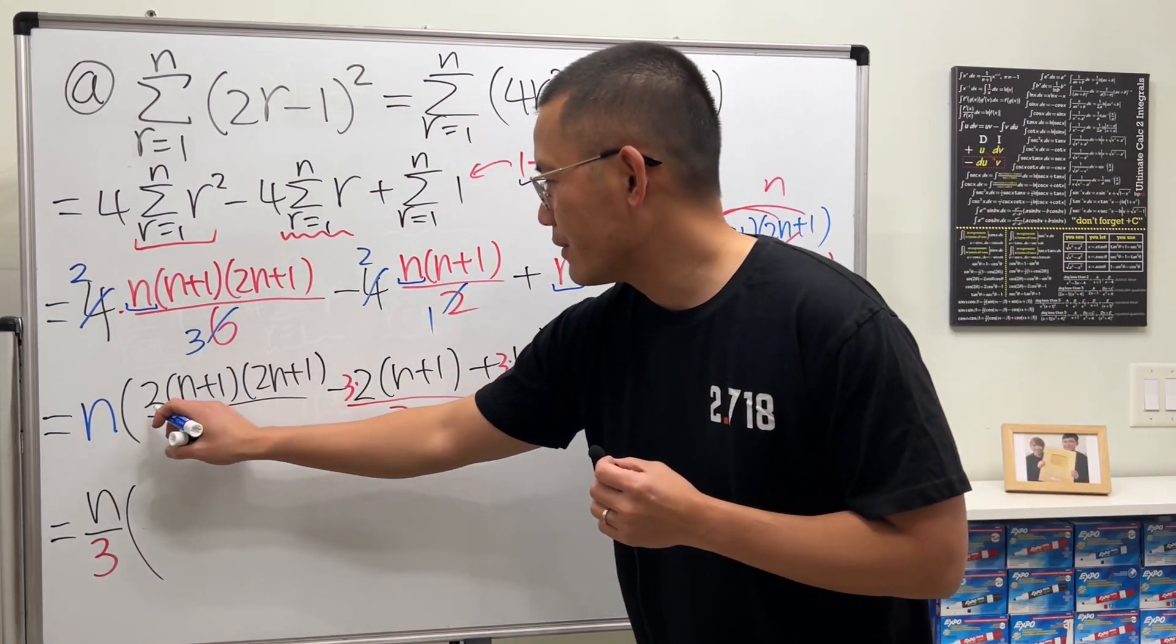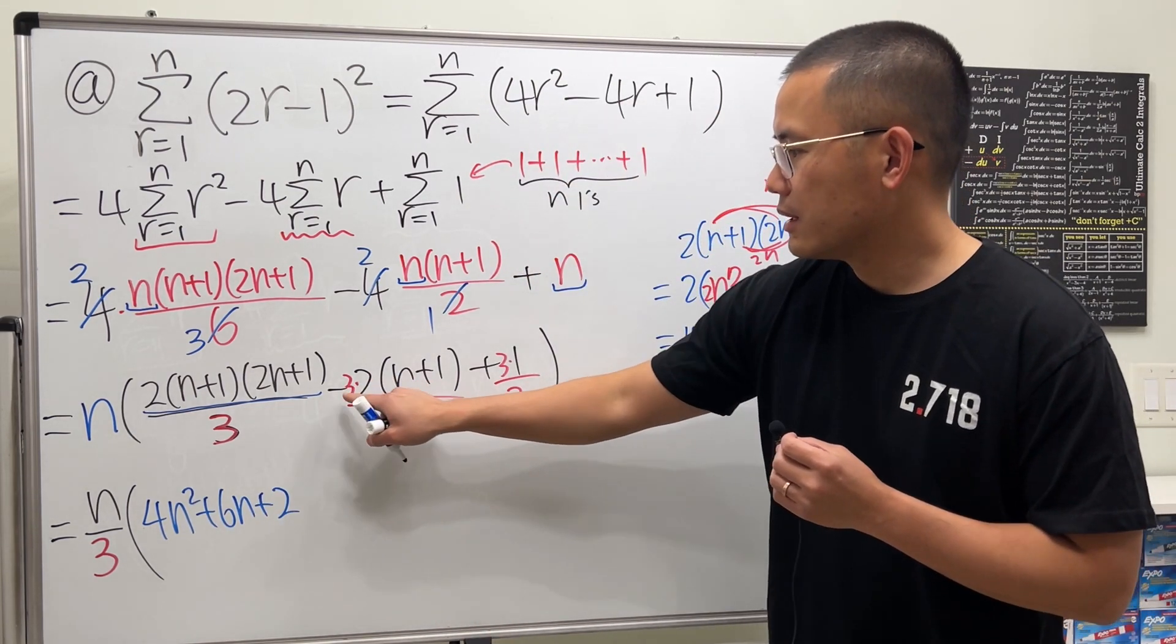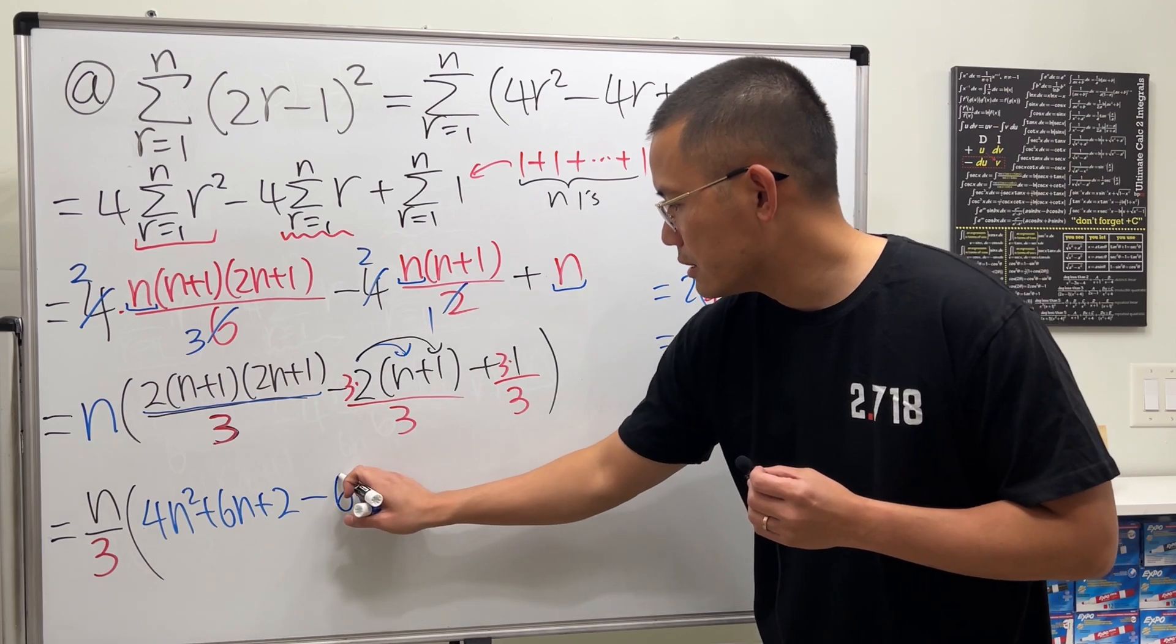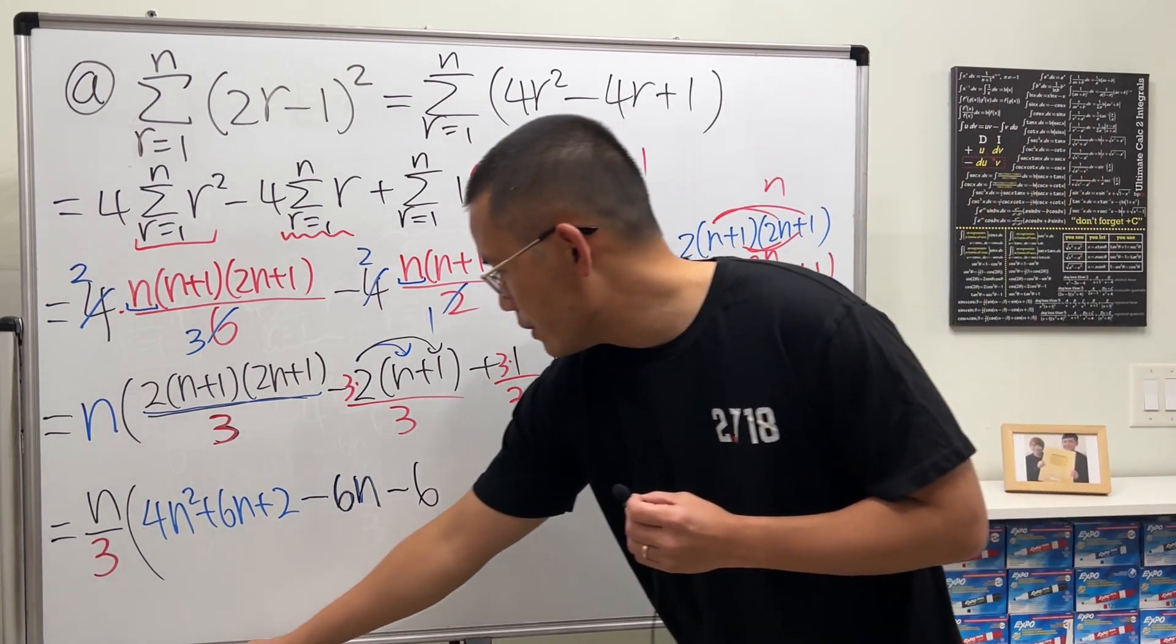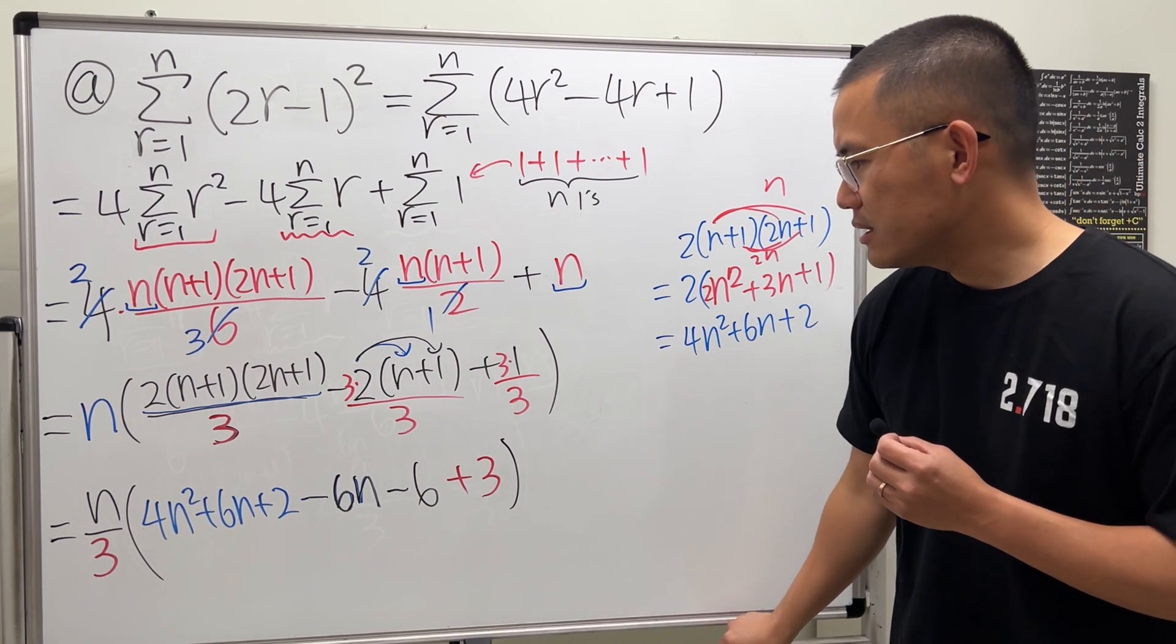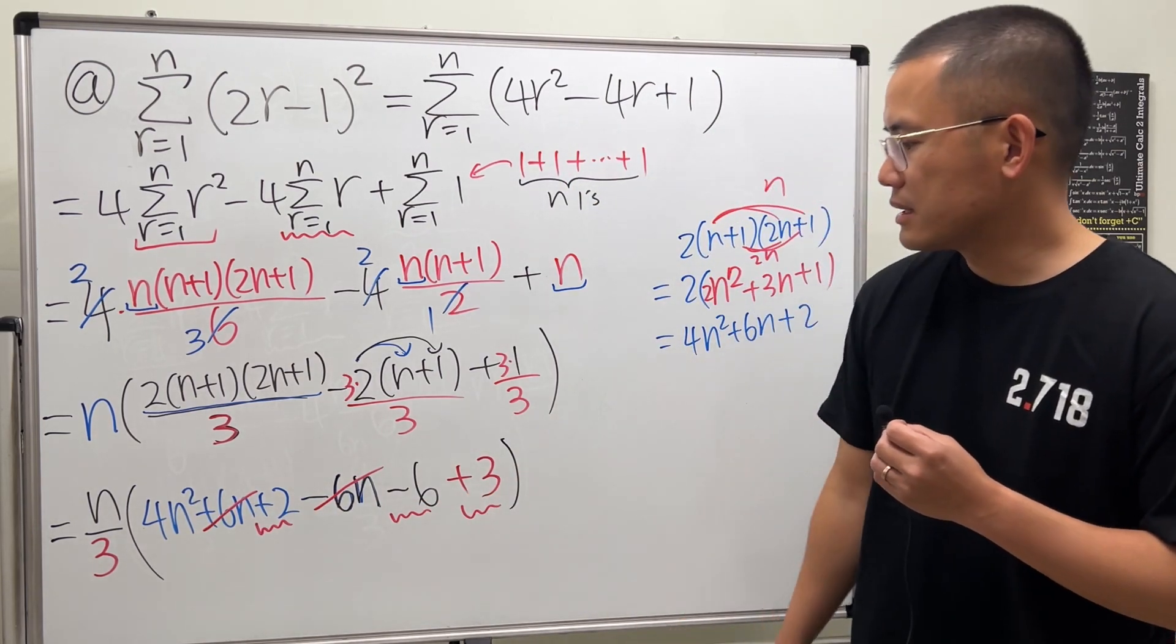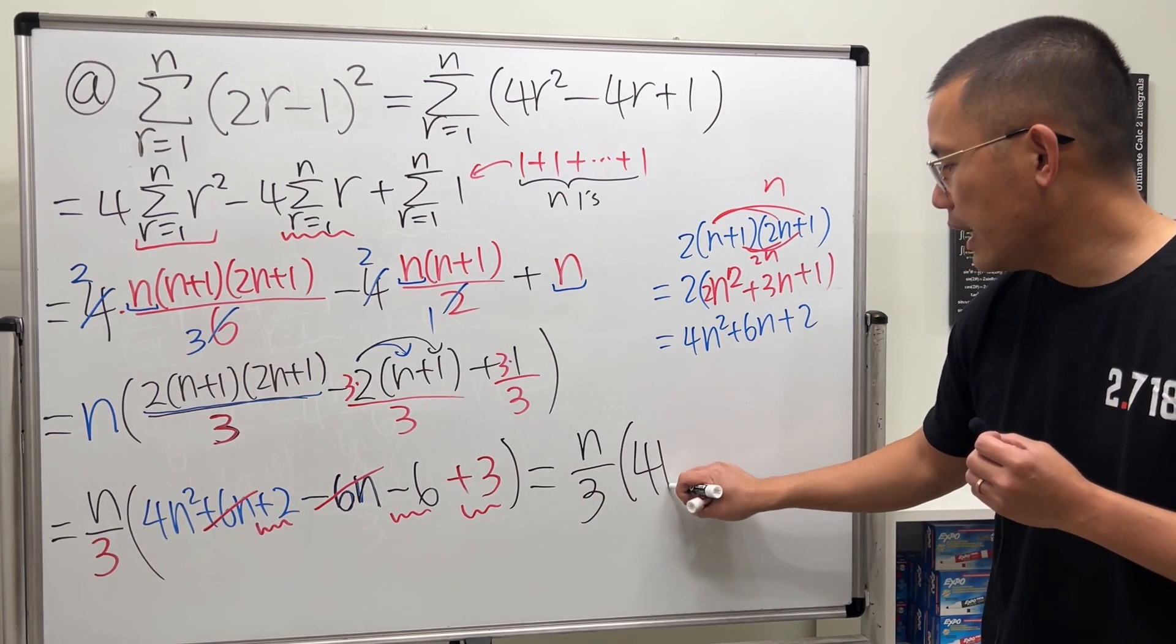Now, for this part, it's this, so 4n squared plus 6n plus 2. And then for this, this is negative 6. So take negative 6, distribute it, so this is negative 6n. Then negative times the positive 1, it becomes minus 6, and then lastly, this is plus 3. And then at the end, we'll just combine like terms. One good thing is that I see the positive 6n minus 6n cancel. That's quite nice. So, 2 minus 6 plus 3, so that's negative 4 plus 3, which is negative 1. And that's it. Then, all together, we have n over 3 times 4n squared minus 1.